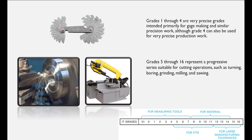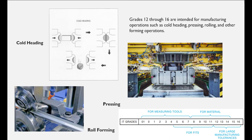From 1 to 4, we use these grades for gauges and mechanical parts which require critical accuracy — these kinds of dimensions are close to the theoretical dimension. Grades from 5 to 16 are used for more general mechanical operations, for example turning, milling, sawing, etc.